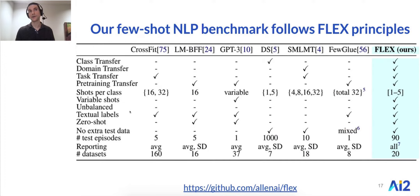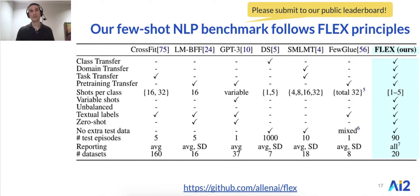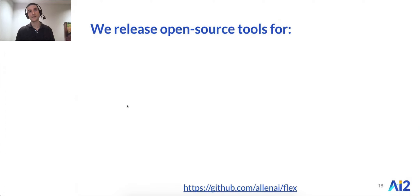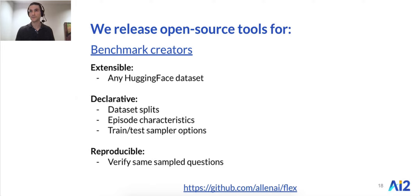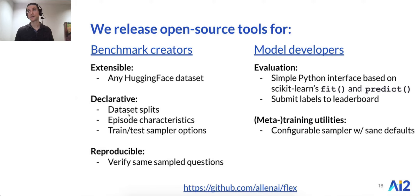I'll refer you to our paper for more details, but as shown in the last column, our benchmark is the first to follow these FLEX principles. Please do submit to our public leaderboard and accept our new benchmark as a challenge. We also release open source tools used to create our benchmark to help future benchmark creators. These tools are extensible — you can plug in any Hugging Face NLP dataset. They allow for declarative specification of dataset splits, episode characteristics, sampler options, and reproducibility. For model developers, they provide a simple evaluation interface and utilities for the sampler.